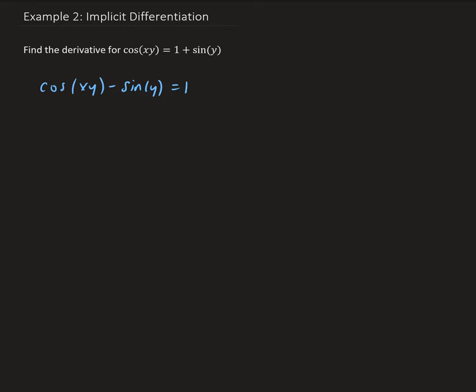From here we're going to take the derivative of each of these terms. So we're going to have the derivative of cosine xy with respect to x, and we're going to take the derivative of sine y with respect to x, equals to the derivative of 1, which is just going to give us 0.